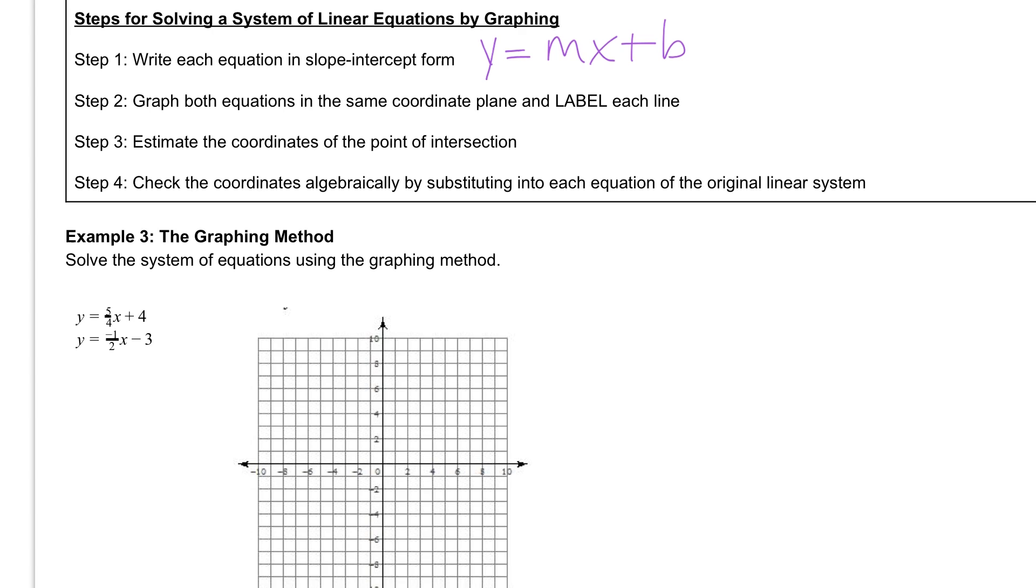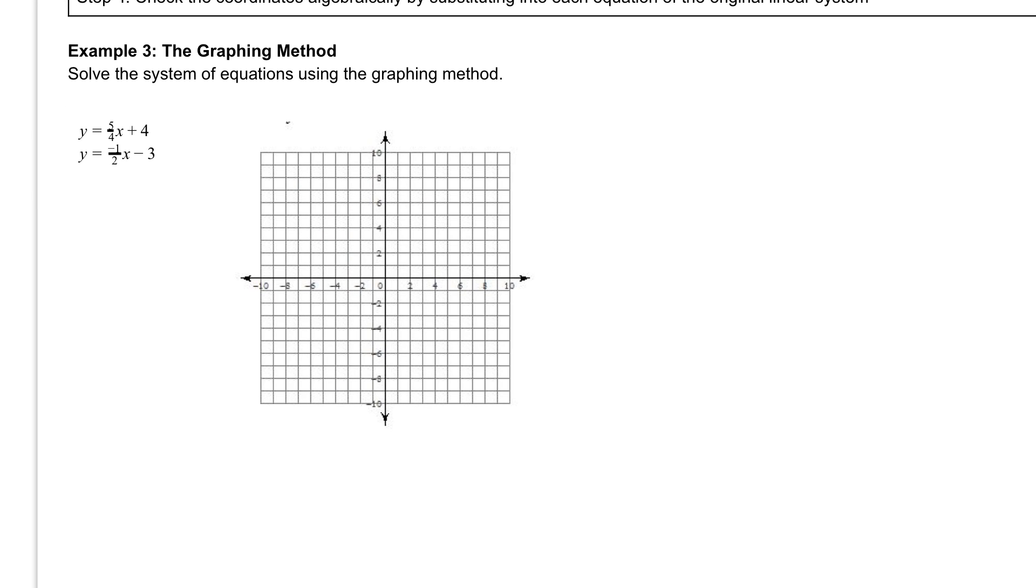So if we take a look at example 3, we have two lines: y equals 5 over 4x plus 4 and y equals negative 1 half x minus 3. And what we want to do is we want to graph both of those lines separately. So let's start with the first line. If we look at y equals 5 over 4x plus 4, we need to know the slope of that line.